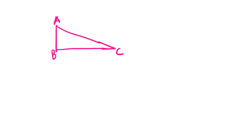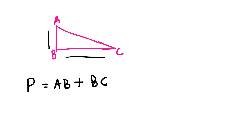Our first shape is the triangle. How do you find the perimeter of a triangle? It equals AB plus BC plus AC — you simply sum all three sides using this equation.